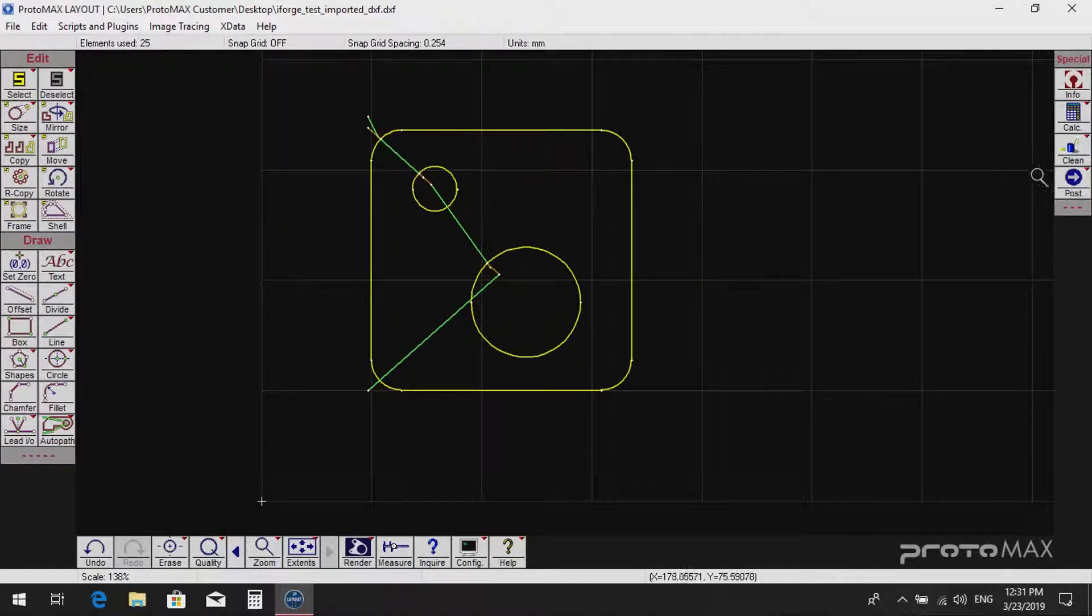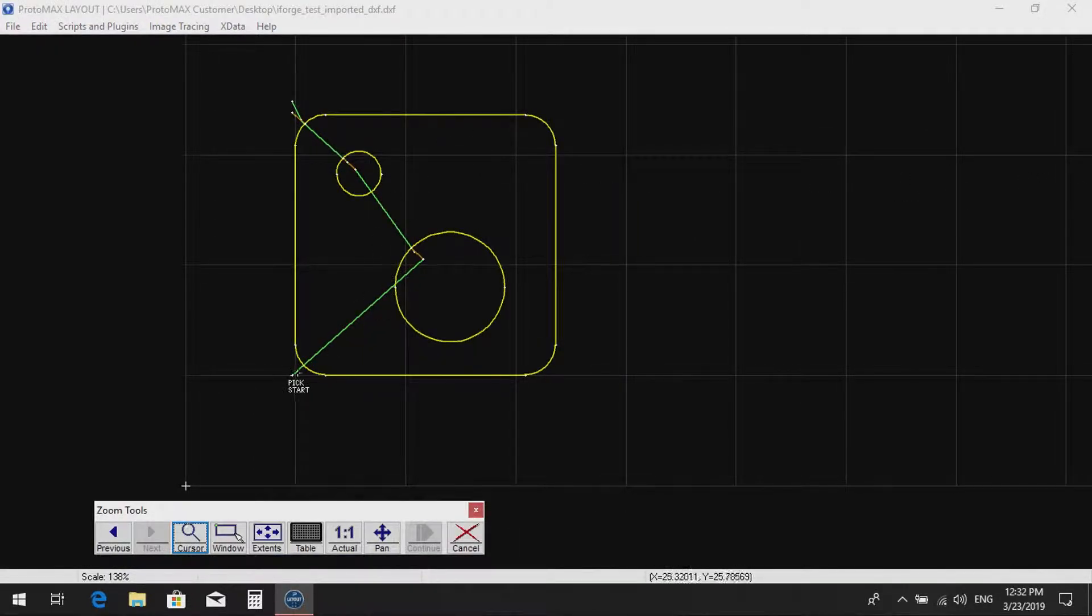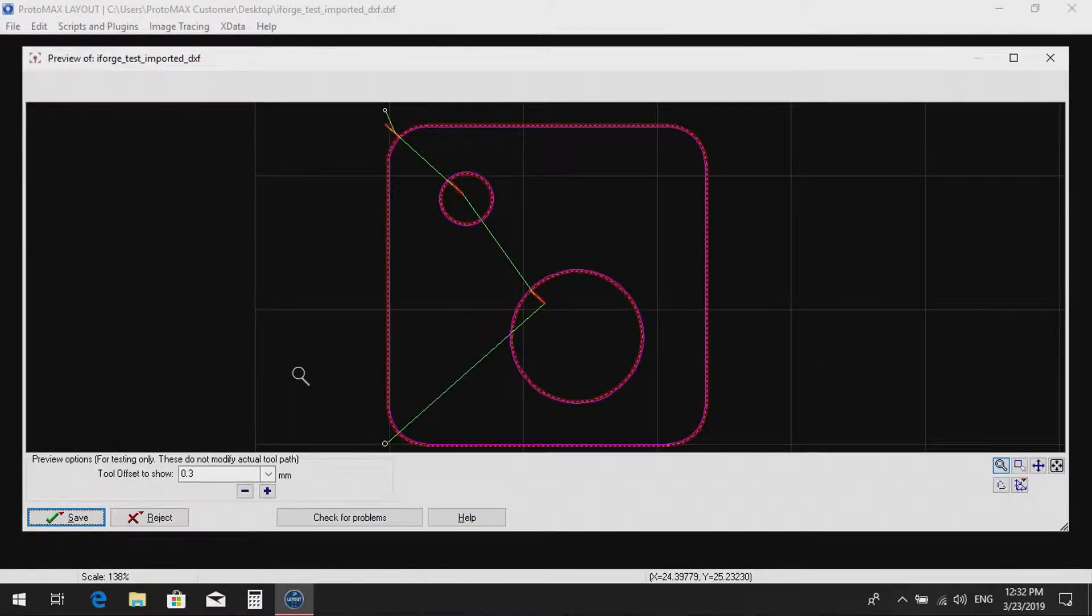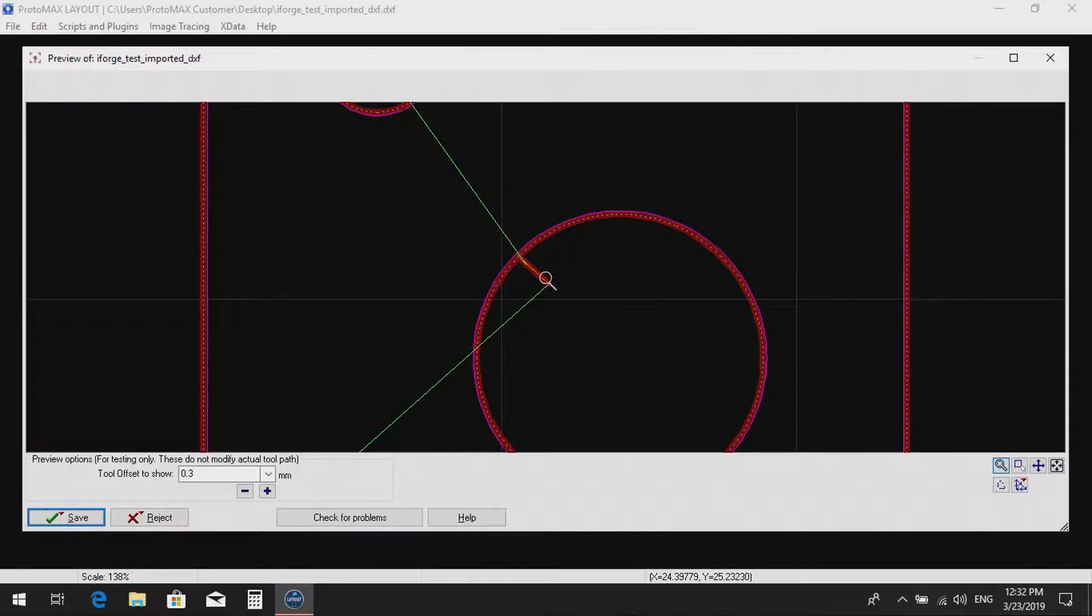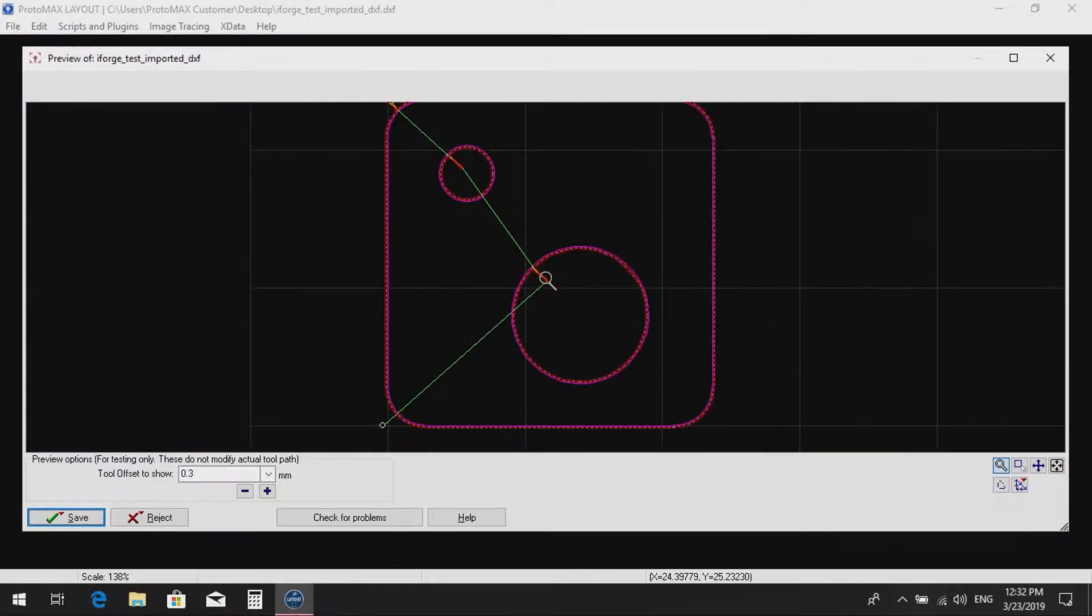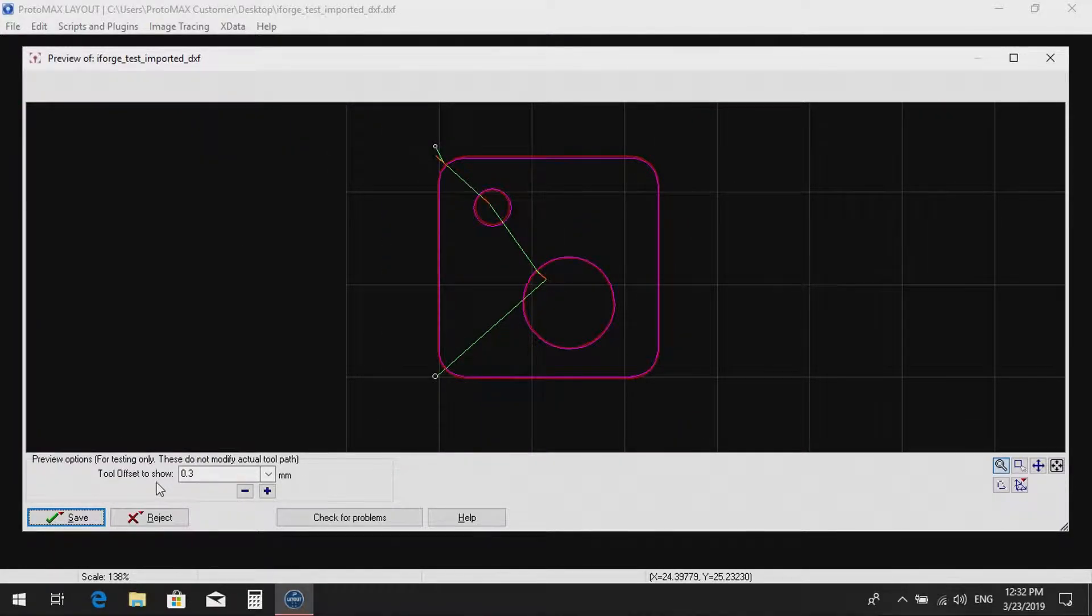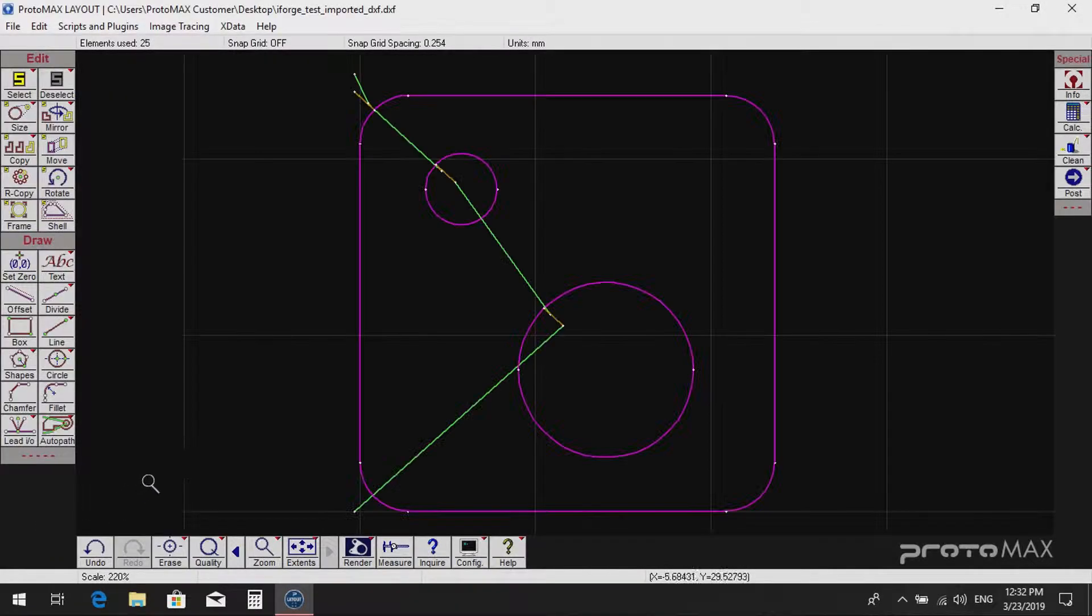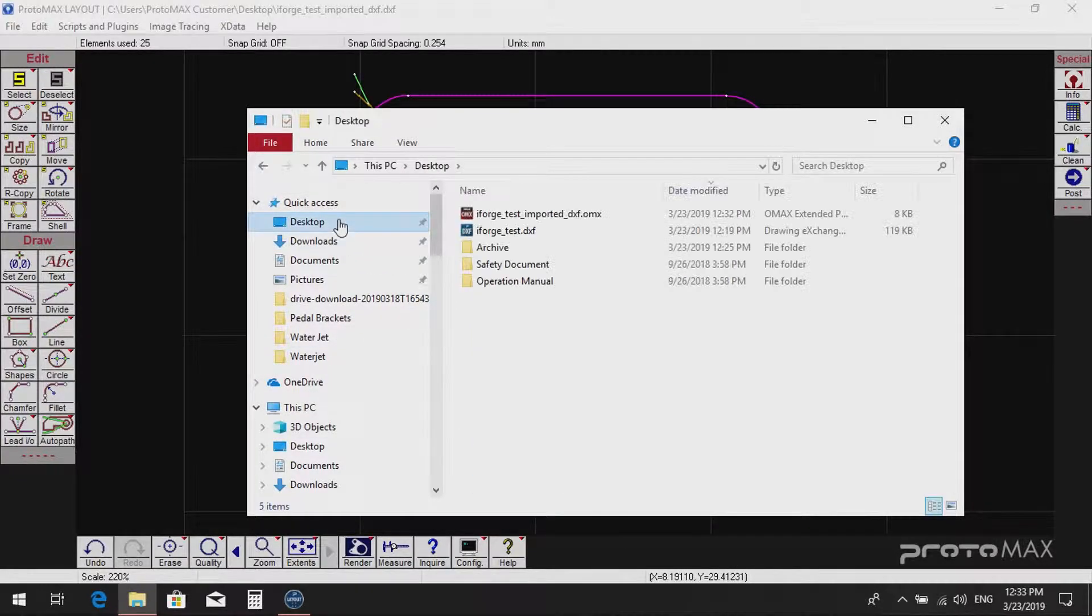Now select Post and select the starting point of the path. Check that the red areas are on the correct side of the cut. For example, the inside of circles if a hole is desired. This will save the toolpath in OMX format in the same location as the original DXF. Move this file to the desktop before proceeding.